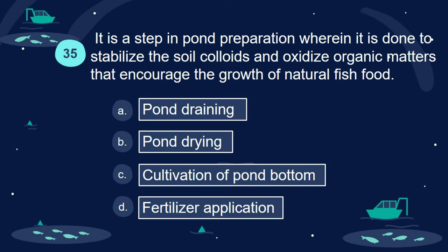Question 35. It is a step in pond preparation wherein it is done to stabilize the soil colloids and oxidize organic matters that encourage the growth of natural fish food. A. Pond draining. B. Pond drying. C. Cultivation of pond bottom. D. Fertilizer application.